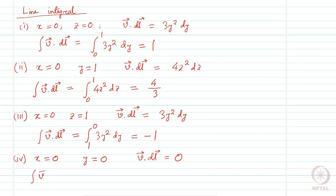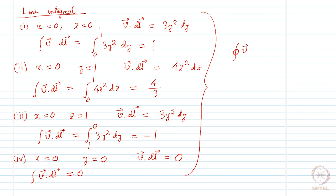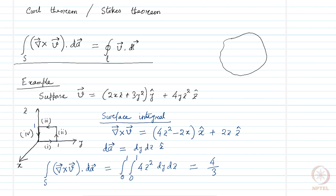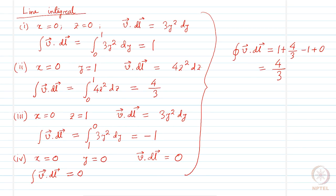The integral of v dot dl over the fourth segment is 0. Adding all contributions, the closed integral of v dot dl becomes 1 + 4/3 − 1 + 0 = 4/3. Earlier we found that curl of v integrated over the surface area was also 4/3. Using the line integral we also found the value to be 4/3. So we have verified Stokes' theorem.